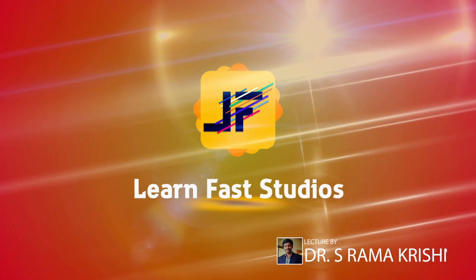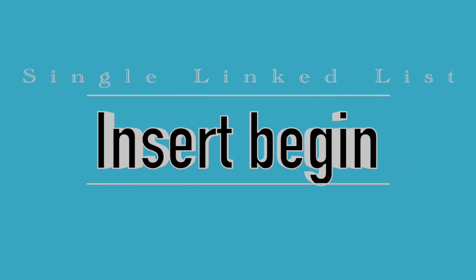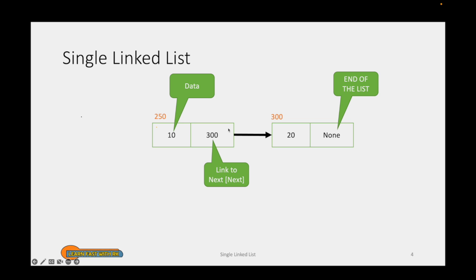Tutorial by LearnFast Studios. The graphical representation of the single linked list: the basic building block is the node. In each node we have two portions — one is the data portion and the second one is a link to the next portion. Let us assume our node is allocated at the location 250, and if we have one more node at 300, in the first node's next portion we hold the address of the second node.